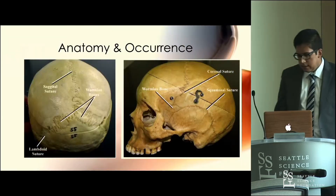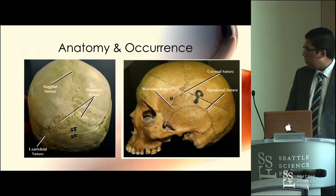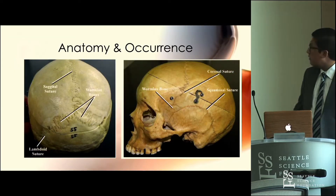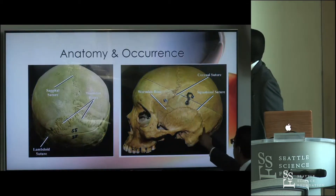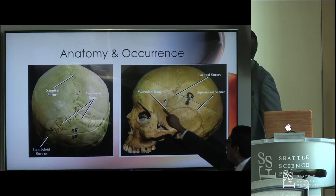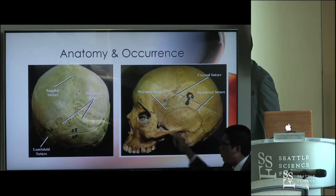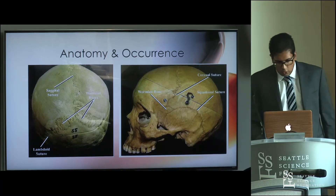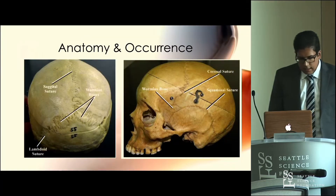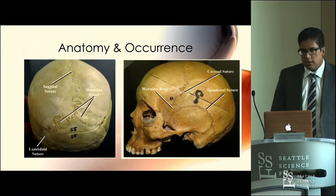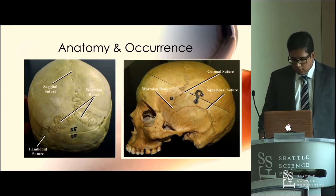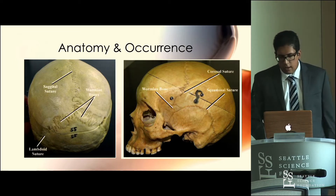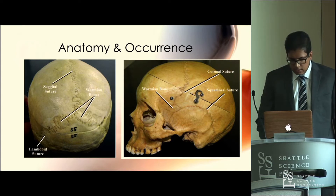The image on the right shows a wormian bone occurring on the side of the skull rather than the back. This is the squamosal suture, and this is a wormian bone occurring within that squamosal suture. Again, they can be found and preserved in cadaveric samples as well. Most often, they're just not clinically significant enough to require intervention.